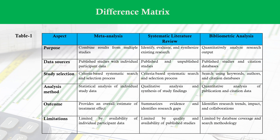Systematic literature reviews are better suited for confined and niche research areas. Bibliometric Analysis and Meta-Analysis rely on quantitative techniques, which can mitigate interpretation bias from scholars across different academic backgrounds, whereas systematic literature reviews rely on qualitative techniques, which could be affected by such bias.